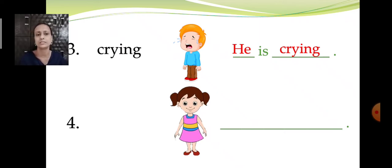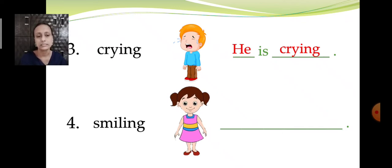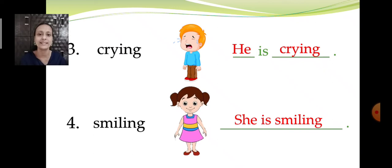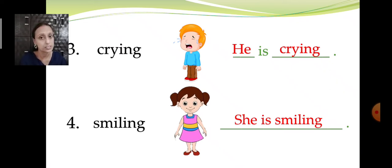Now look at the fourth picture. What is the girl doing? S-M-I-L-I-N-G — smiling. The girl in the fourth picture is smiling. This is the action done by the girl. When you smile, you all smile — come on, all of you smile! So this is the action done by you all. She is smiling. The sentence will be: she is smiling. And at the end, you are going to put a full stop. Always begin with a capital letter.